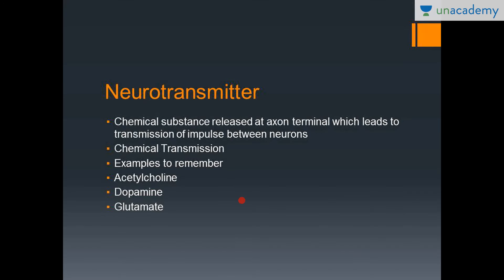A neurotransmitter is a chemical substance released by the axon terminal that leads to transmission of impulses between two neurons. Examples to remember are acetylcholine, dopamine, and glutamate — three commonly seen neurotransmitters in the human nervous system. That concludes this lesson; thank you for watching.